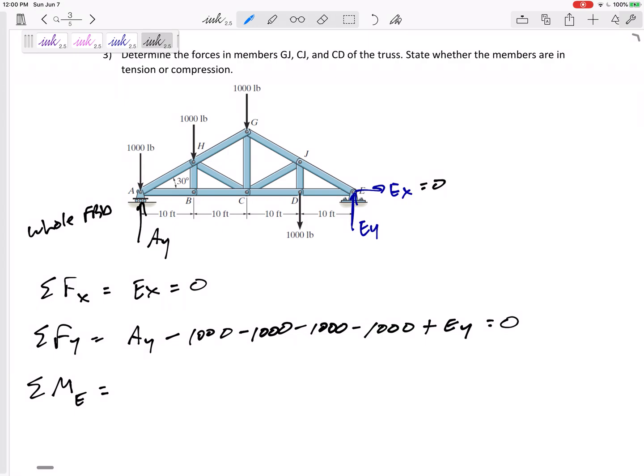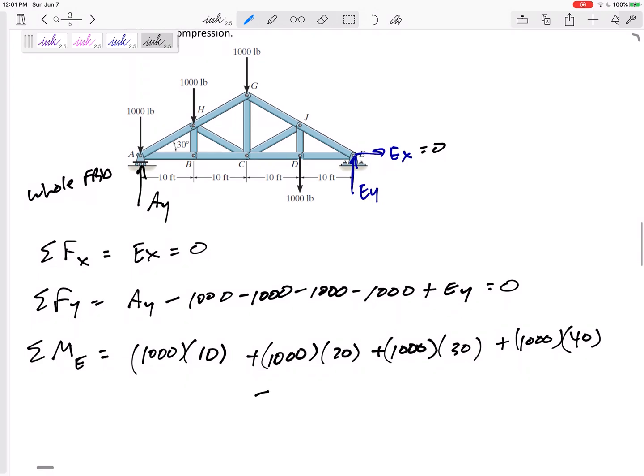Summing the moments about E. EX goes straight through it, EY goes straight through it. This 1,000 pound force is acting 10 feet away creating a positive moment. This 1,000 pound force is acting 20 feet away. This 1,000 pound force is acting 30, and this 1,000 pound force is acting 40. And then AY is acting 40, and that's creating a negative moment. The rest of those were all counterclockwise, counterclockwise, counterclockwise, counterclockwise. AY is clockwise. That's why it's negative. Equals zero.